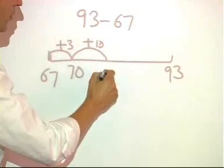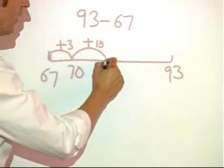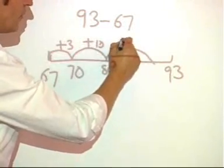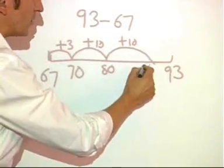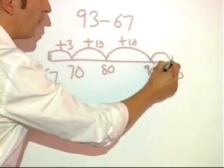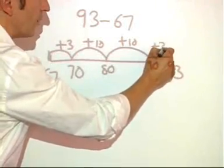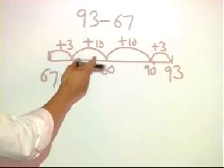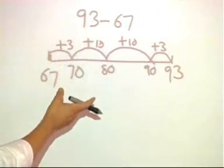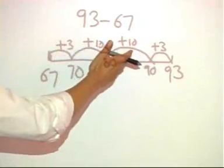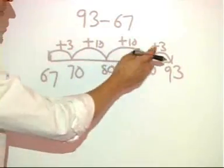Adding 10 will take me to 80. A further 10 will take me to 90. And then my final jump of 3 will take me to 93. And then I can add up these steps to find the total difference. 10, 20, 23, 26.